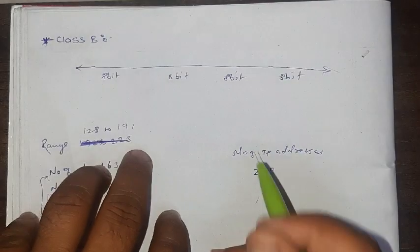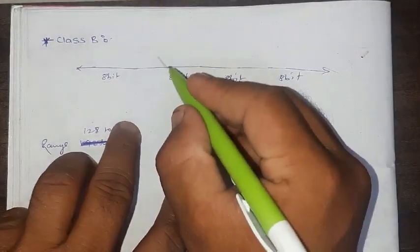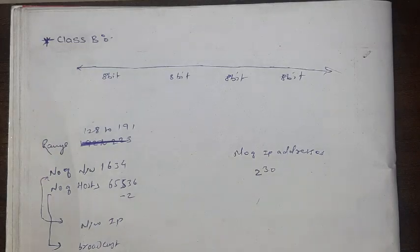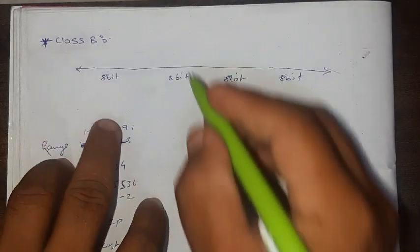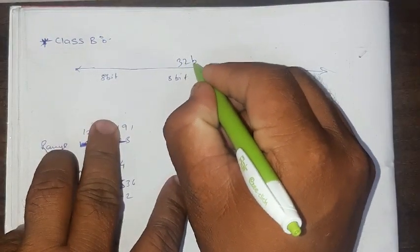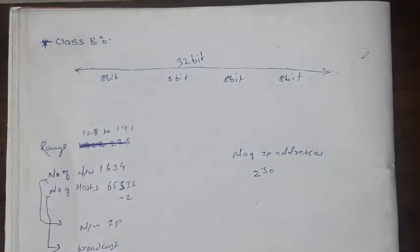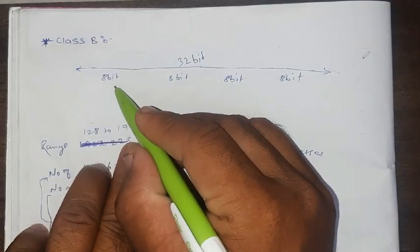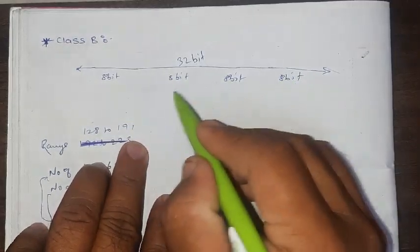Here we know very well the total IP address length is 2 raise to 32 bit, that is 32 bit. In this total length we are dividing 4 bytes separately.